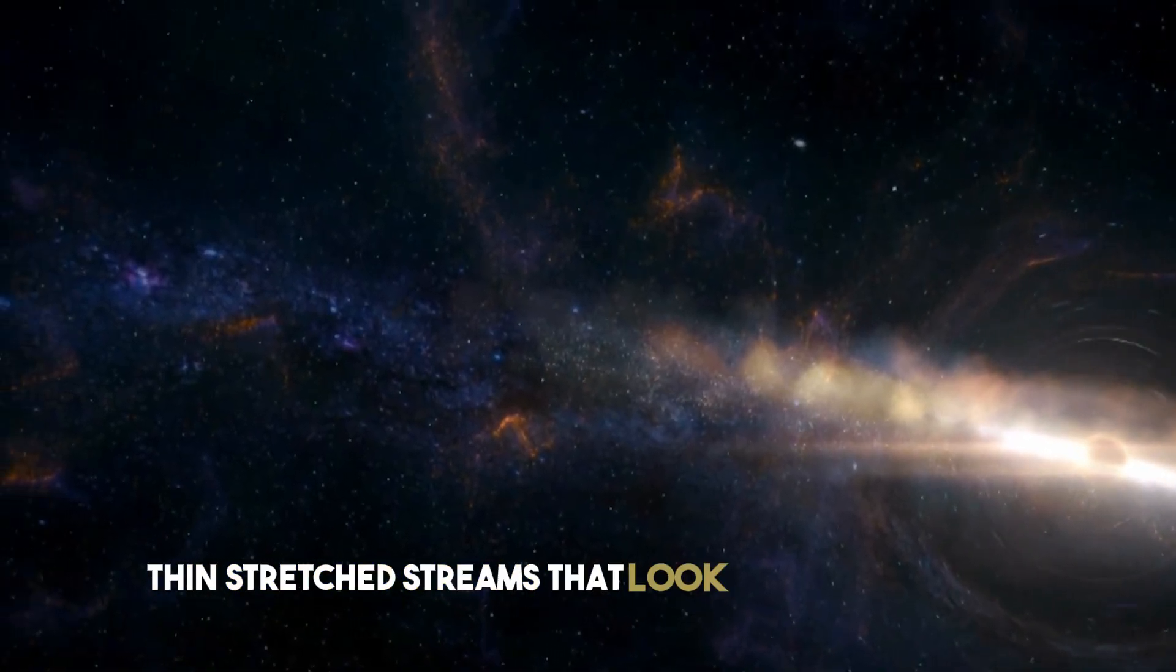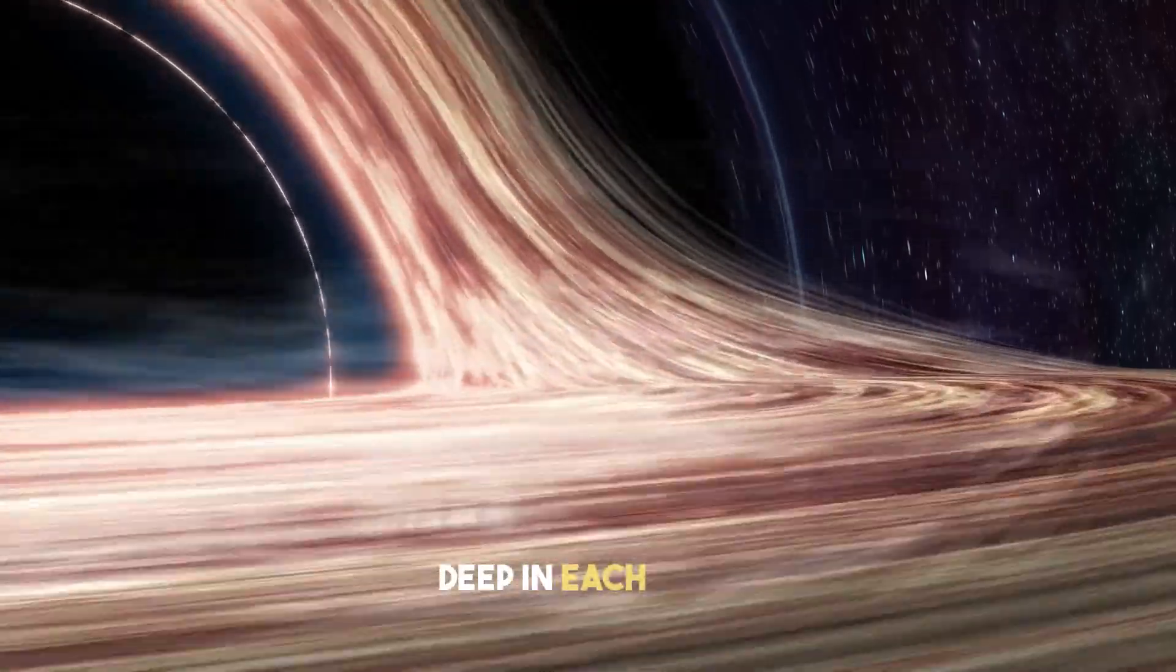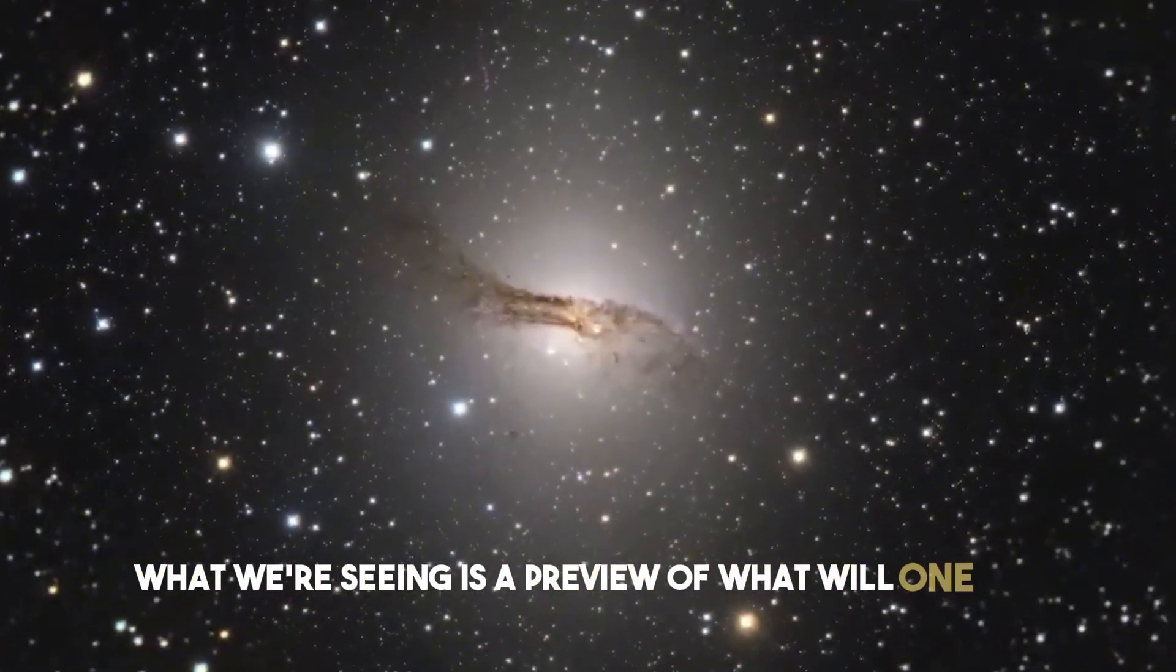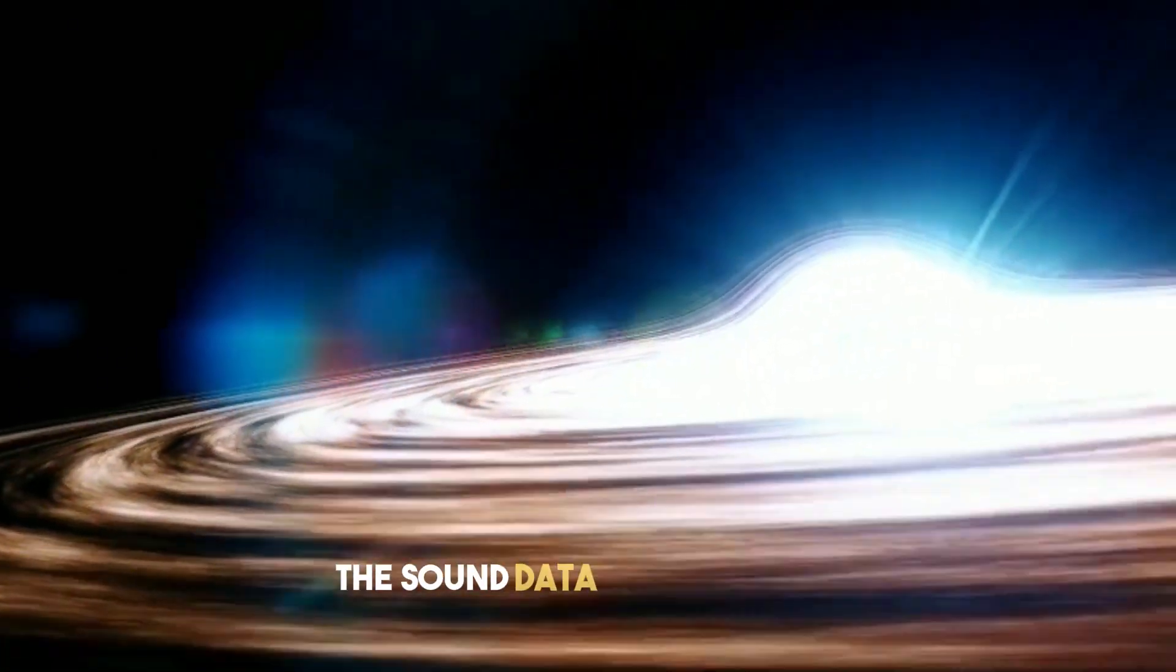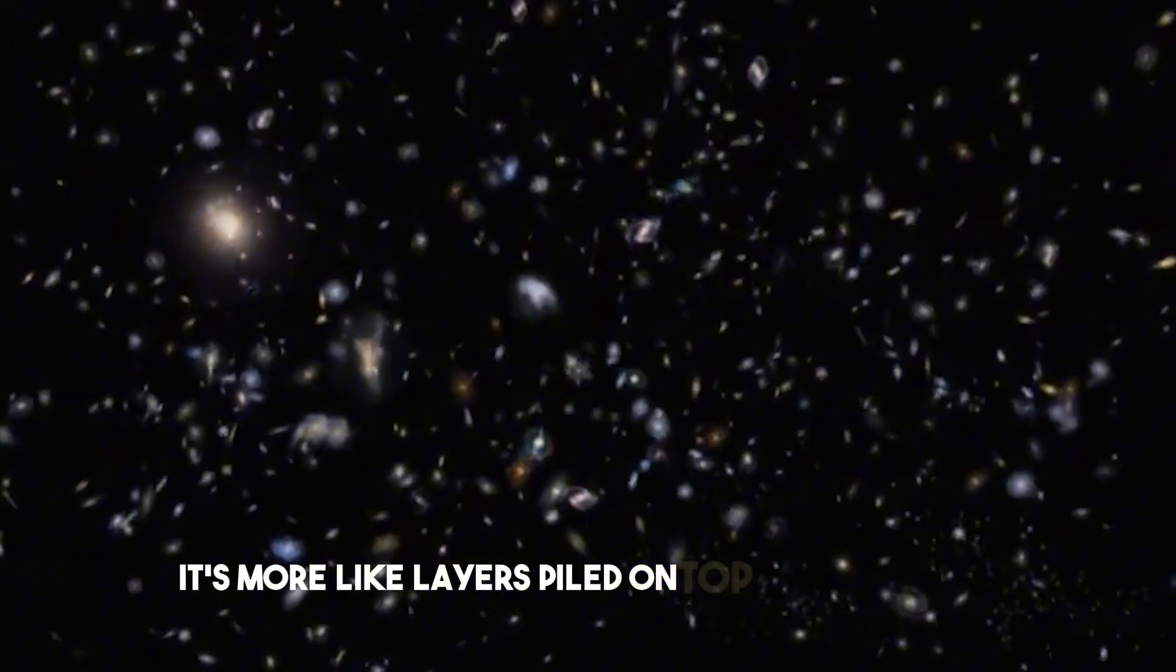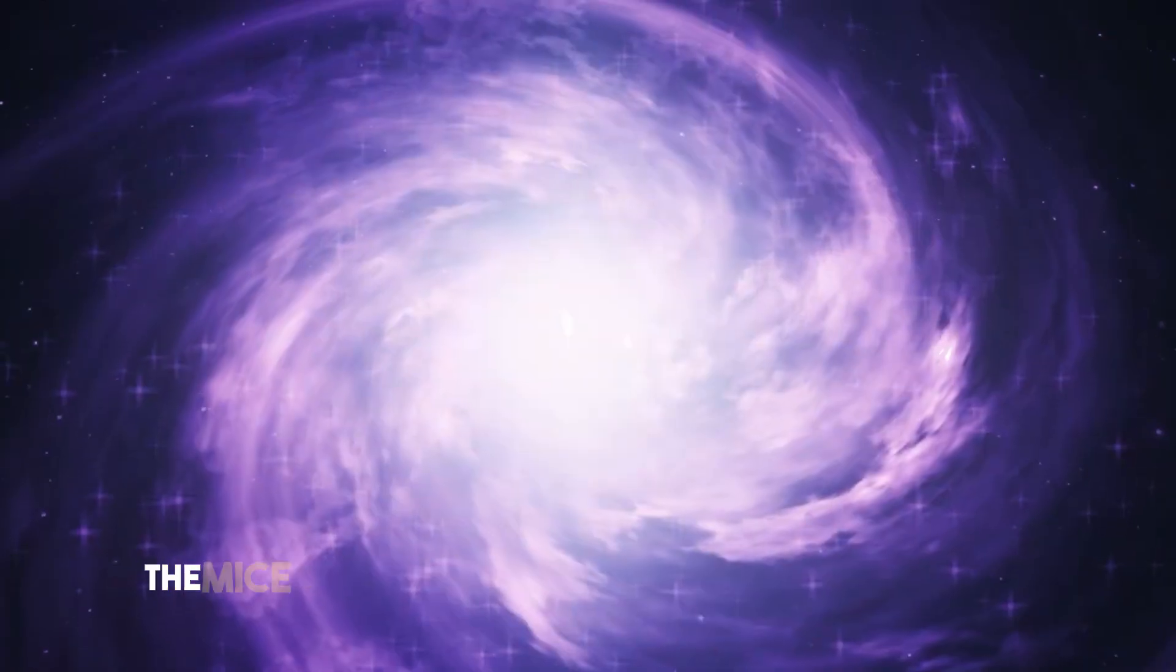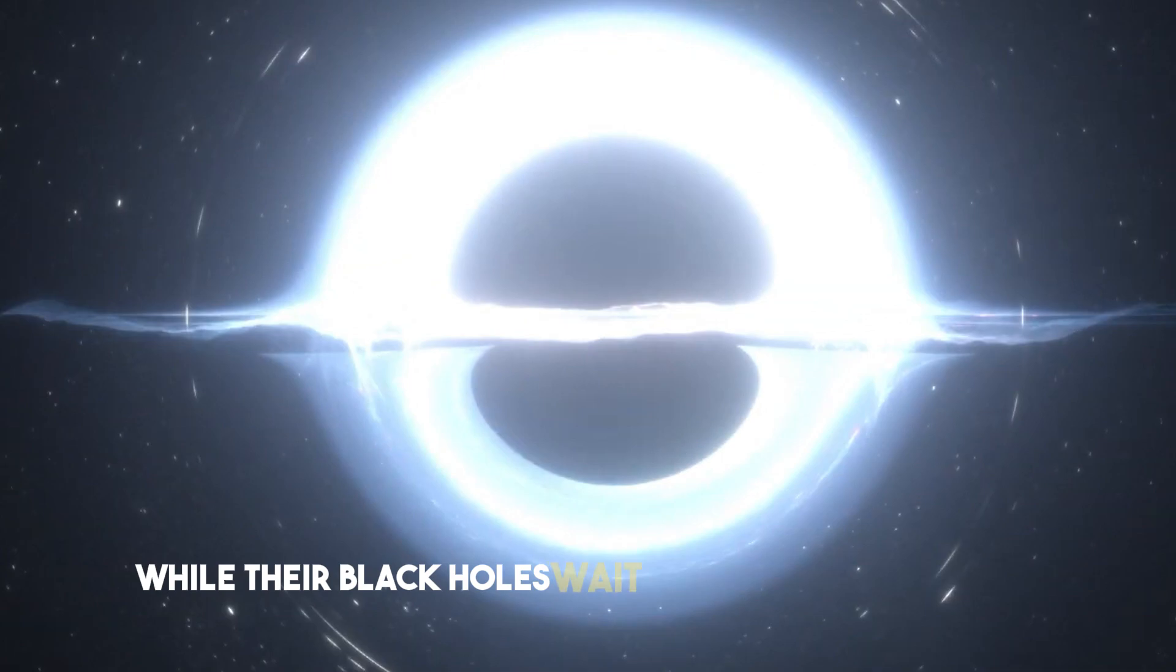The chaos isn't random. Deep in each core, supermassive black holes are being shaken awake, stirred by the collision. What we're seeing is a preview of what will one day happen to our own Milky Way when it crashes into Andromeda. The sound data from the mice doesn't come across as a neat tone. It's more like layers piled on top of each other, the signal of galaxies grinding together. If Centaurus A is one black hole showing off, the mice are a pair of galaxies screaming mid-crash while their black holes wait to claim the wreckage.